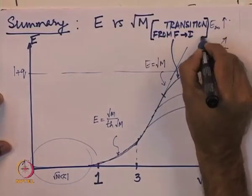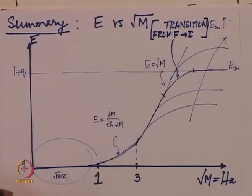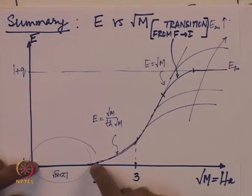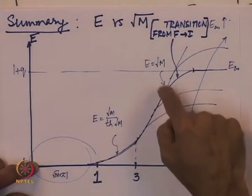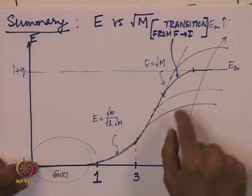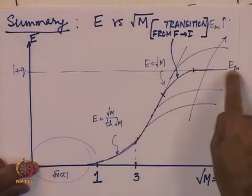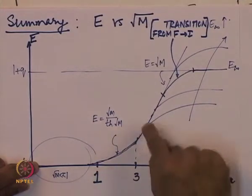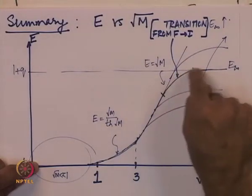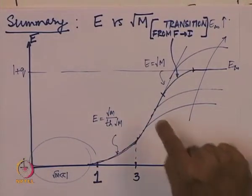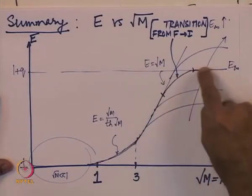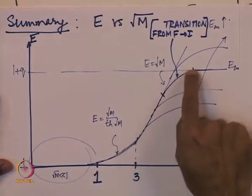We have analytical expressions for the enhancement factor in all regimes within the framework of film theory: E equals 1 in the slow regime, a specific expression in the transition from slow to fast, E equals root M on the fast reaction asymptote, and E equals E-infinity in the instantaneous regime. The only regime lacking a rigorous expression is the transition from fast to instantaneous. However, knowing both asymptotes, we can perform an approximate interpolation to track the course of the enhancement factor as root M increases through that transition regime.